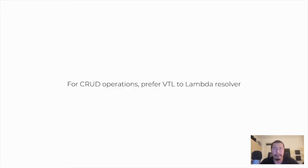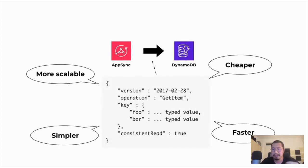For simple CRUD operations, you just shouldn't use Lambda resolvers. Instead, go straight from AppSync to DynamoDB via VTL — it's cheaper, it's faster, it's more scalable, and it's simpler because you don't have to write and configure another Lambda function, set up IAM roles, and so on.